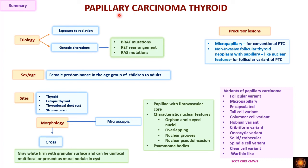In summary: papillary carcinoma of the thyroid has characteristic nuclear features with follicular cell differentiation. Etiology includes radiation exposure (environmental) and three genetic mutations — BRAF, RET rearrangement, and RAS. It shows female predominance, occurring from children to adults. It can occur in the thyroid, ectopic thyroid tissue, thyroglossal duct cyst, and struma ovarii. Grossly, it is a gray-white firm nodule with granular cut surface, presenting as unifocal, multifocal, or as a mural nodule in a cyst. Microscopically, tumor cells lining papillae show Orphan Annie nuclei, nuclear overlapping, grooves, pseudo-inclusions, and psammoma bodies in 50 percent of cases.